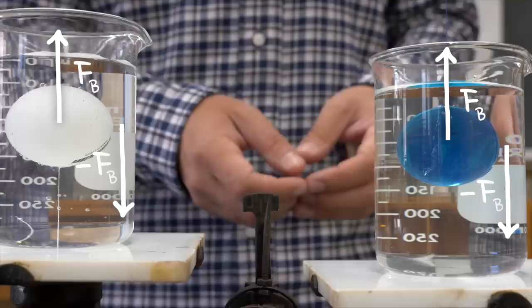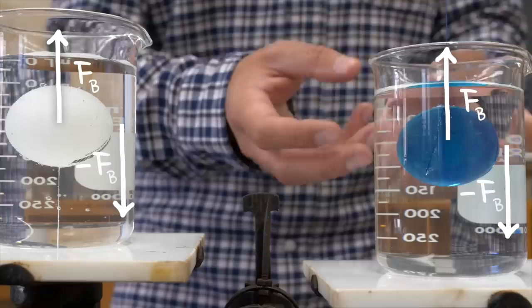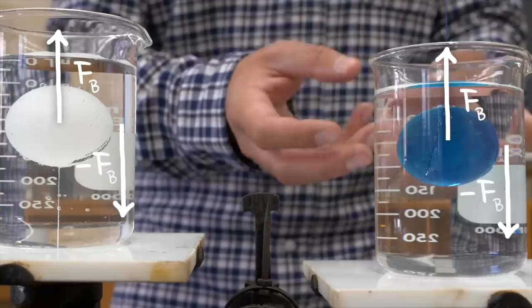Now for the hanging ball, the beaker does get heavier by this amount because the buoyant force is now supporting some of the weight that used to be supported by the tension in the string. But it's now reduced and so the beaker actually has more weight.